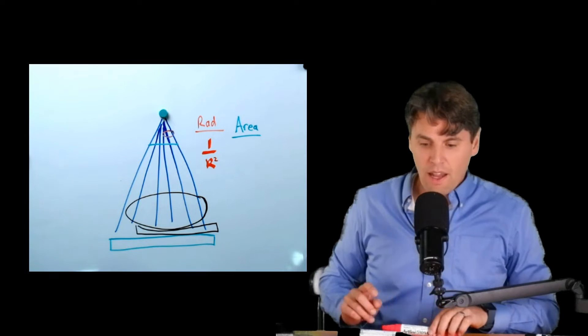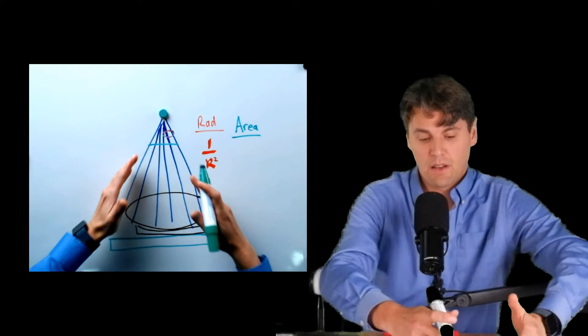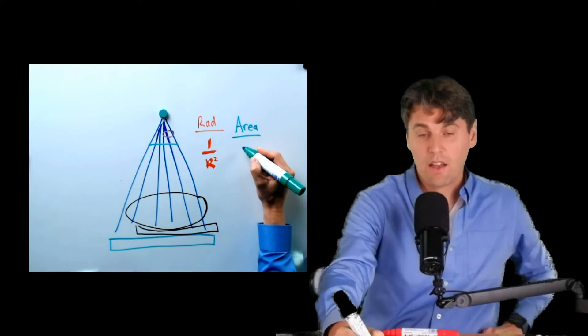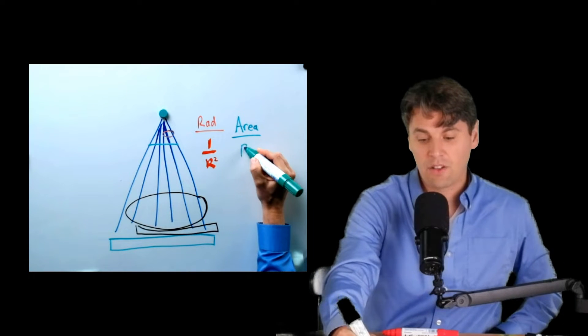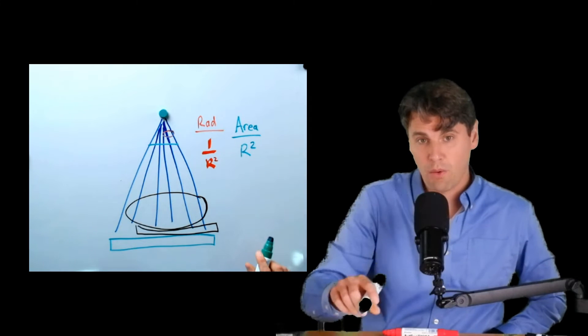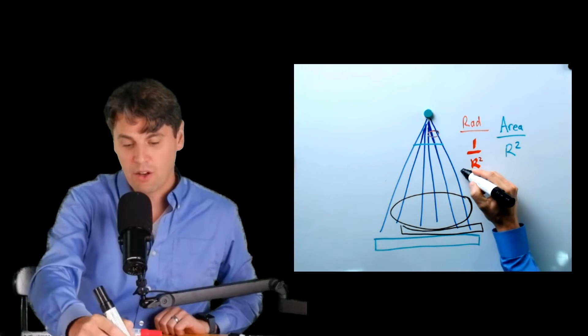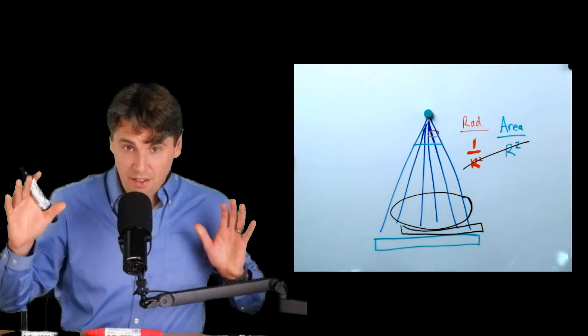And the area, this beam is diverging, so it's going to be covering a larger area. So the area is actually going like R squared. So that is a nice thing about the way that the Kerma area product is developed.